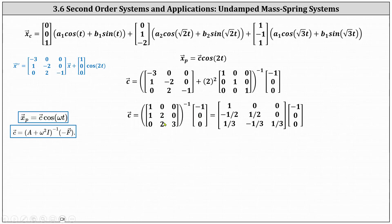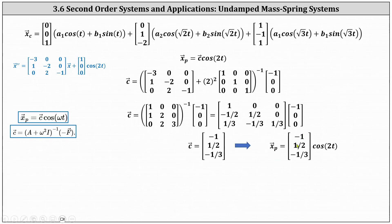The inverse of that three-by-three matrix has entries one, zero, zero in the first row; negative one-half, one-half, zero in the second row; and one-third, negative one-third, one-third in the third row. Multiplying this inverse by the vector negative one, zero, zero gives vector c equal to the vector negative one, one-half, negative one-third. Therefore a particular solution is x sub p equals the vector negative one, one-half, negative one-third times cosine two t.